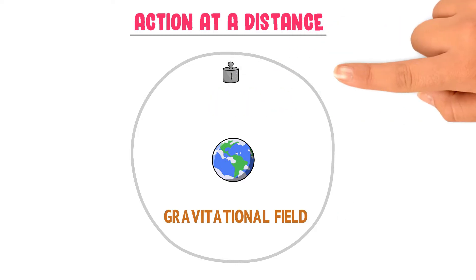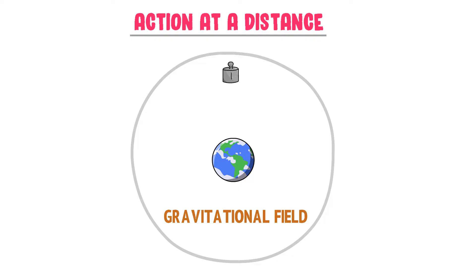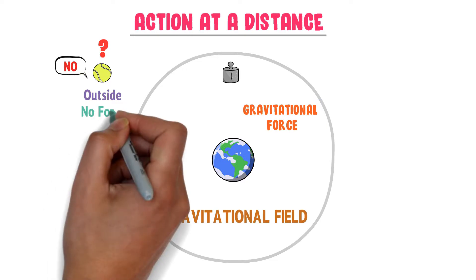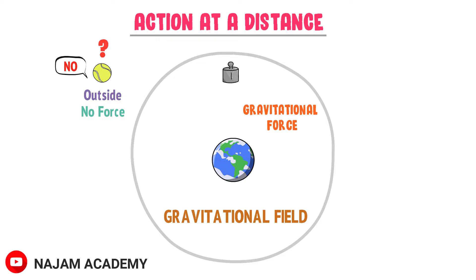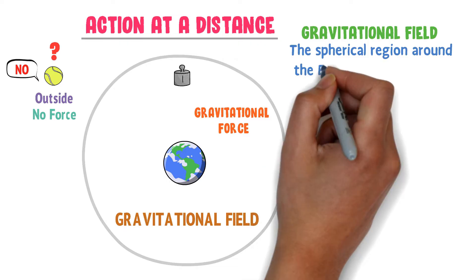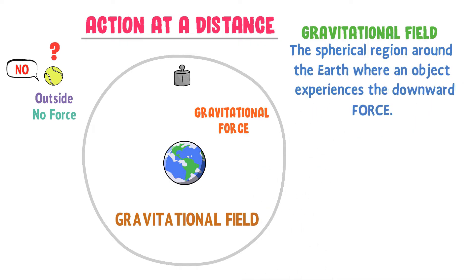Now let's consider an object present in the gravitational field. This object experiences the downward pulling force of the earth known as gravitational force or gravity. So this object accelerates towards the earth due to gravity. Now let's consider another object outside the gravitational field — does this object experience gravitational force? The answer is no. This object doesn't experience the downward pulling force because it is outside the gravitational field.